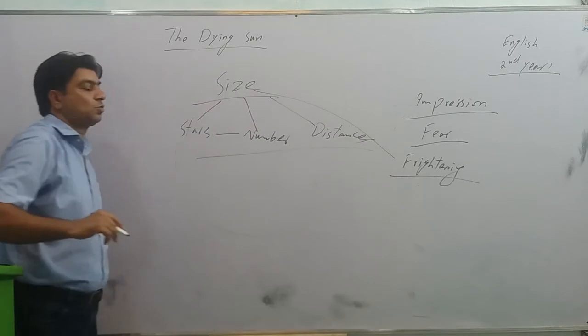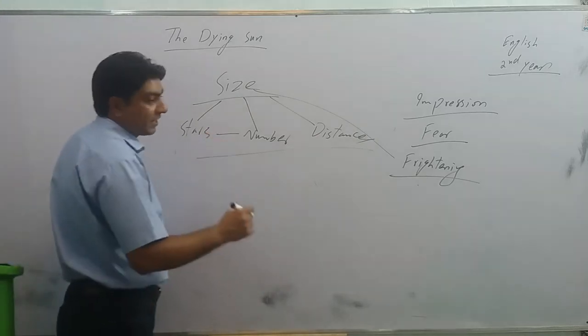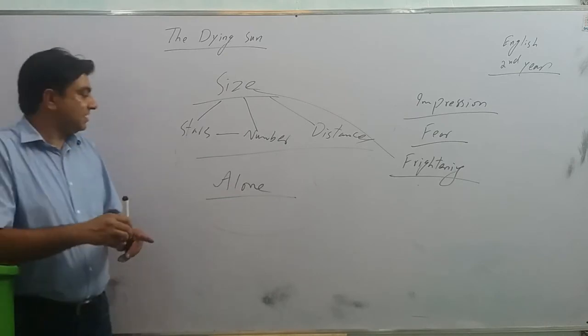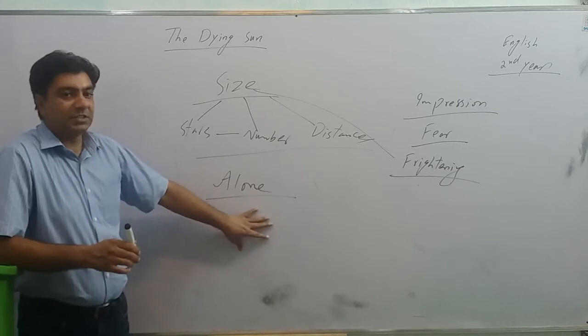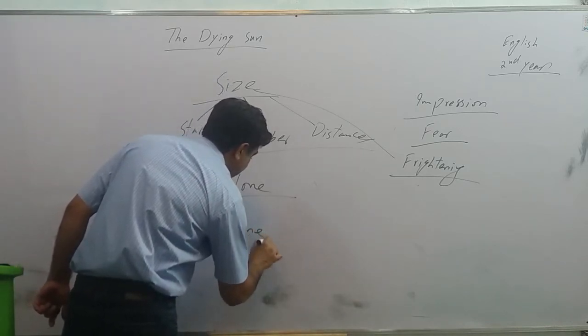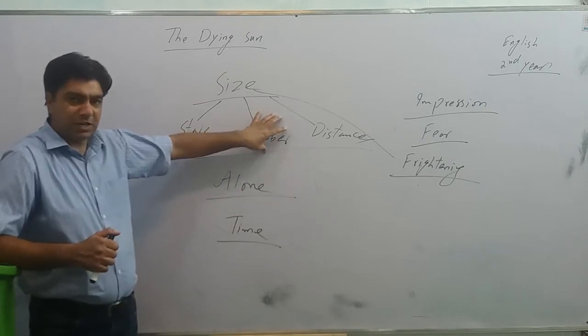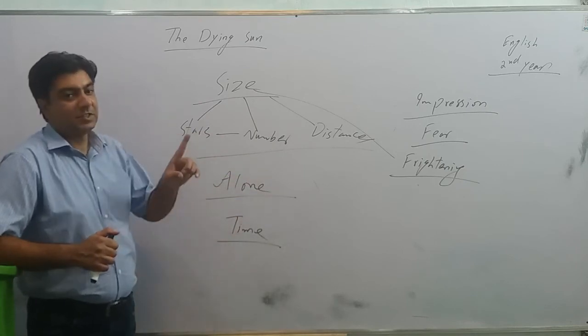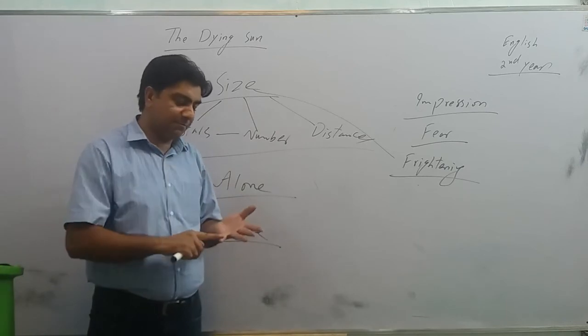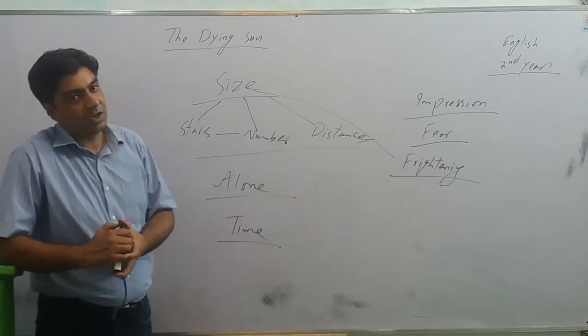Secondly, the universe is frightening because we are alone in the universe. We don't see any signs of life on any other planet in the universe. This frightens us. And the third thing that frightens us is time, the stretches of time. We do not know when was this universe created. We do not know how long will it last. And in comparison with the life of the universe, the life of planet earth is very very short. And in comparison with the life of planet earth, the life of human beings on planet earth is very very short once again. So all this is frightening.